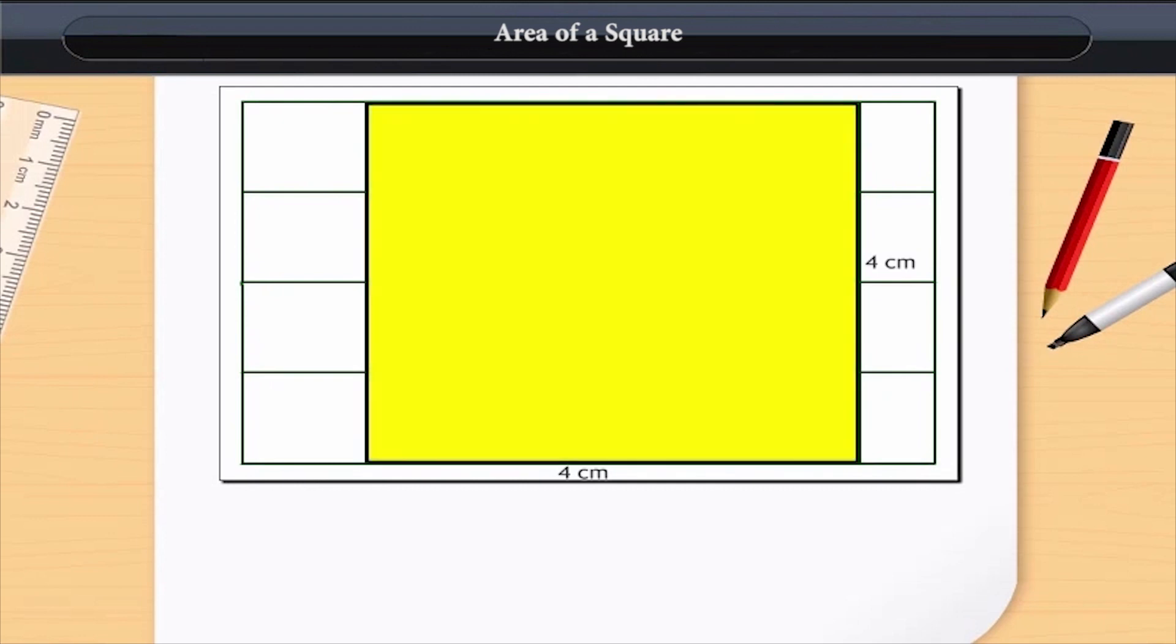Let us construct a square with a side of 4 cm. To cover the square, we need 16 squares of 1 cm length.